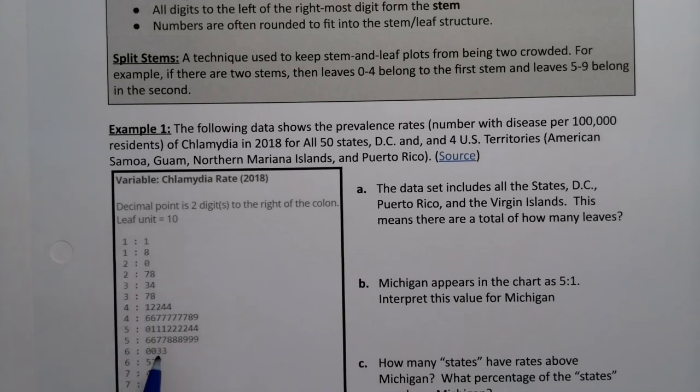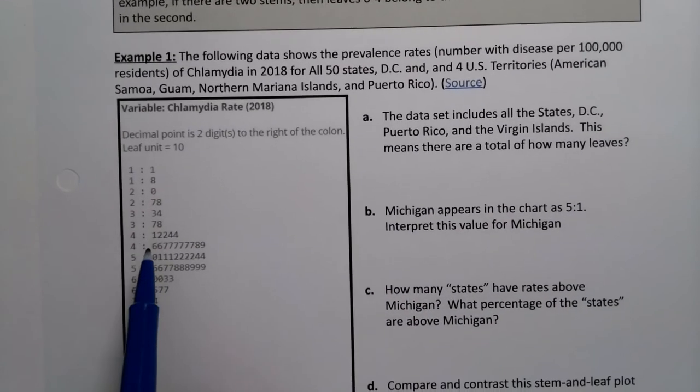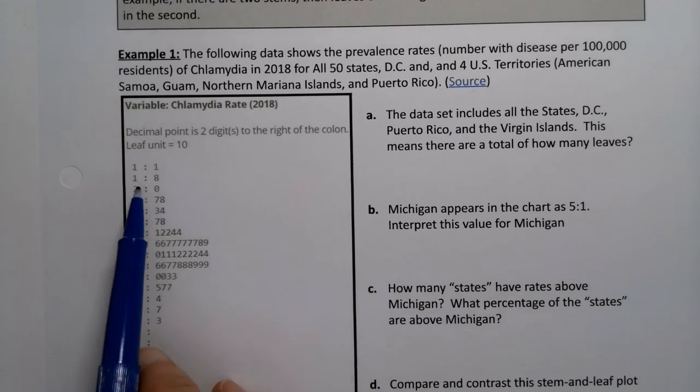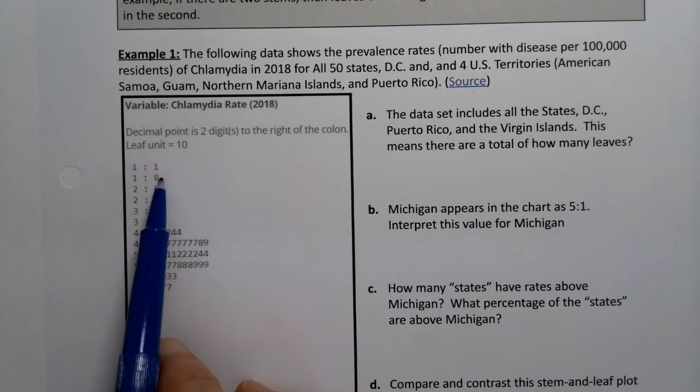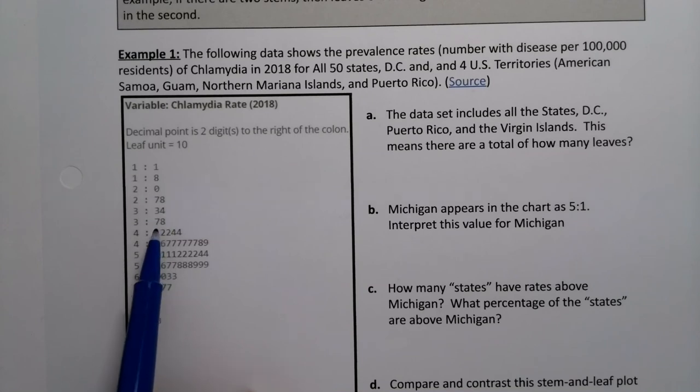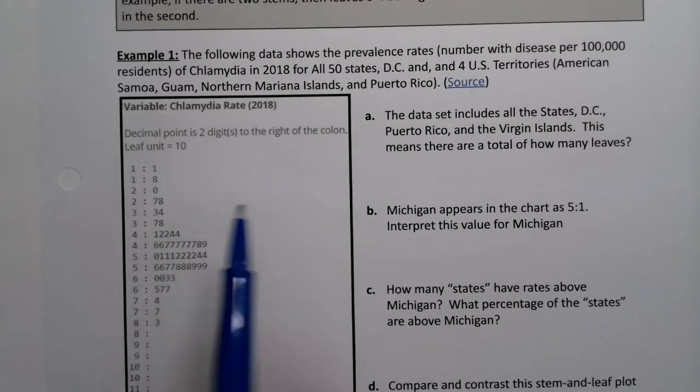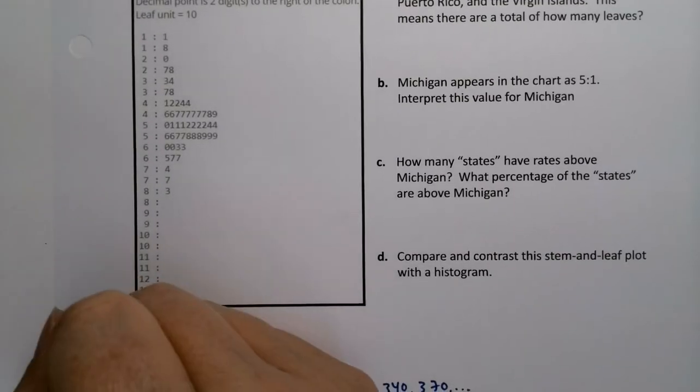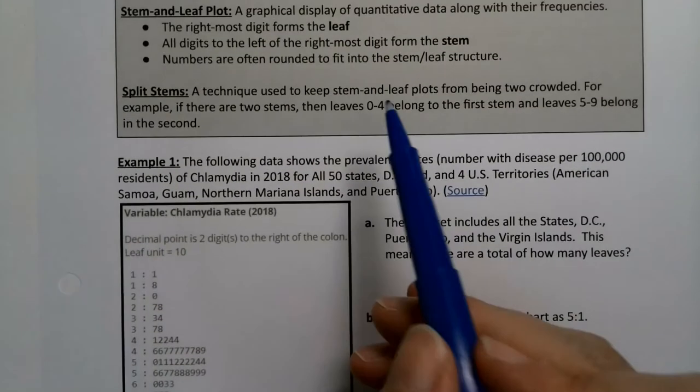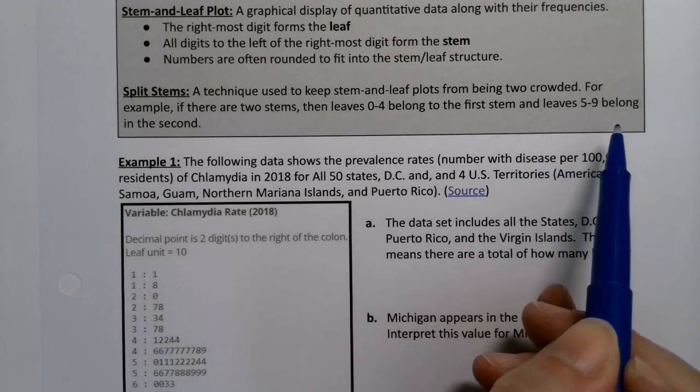Look at these fives right here. If you tried to make the 500s into one long stem with leaves, the leaves would be all the way out to here and it'd just be kind of hard to read. So we split the stem into two groups. All the ones that are zero through four are in the first one, and then all the five through nines are in the second one. So 200 goes here, but 270 goes in the second line. 330 and 340 go here, but 350, 360, 370, 380 would go here, and so on. So actually these are split stems, split into two rows. Zero to four in the first stem, five through nine in the second.